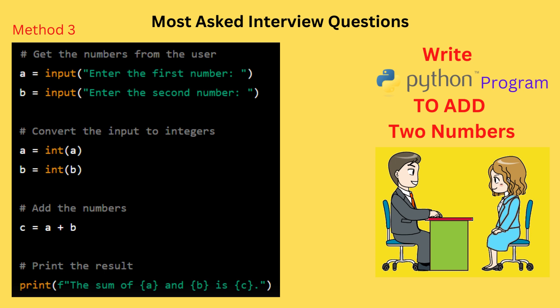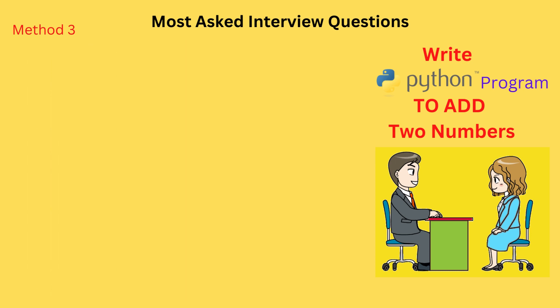This code gets the numbers from the user by calling the input function and prompts the user to enter the values. The input is then converted to integers using the int function and added using the plus operator. The result is stored in the variable c and printed to the console using the print function and string formatting.